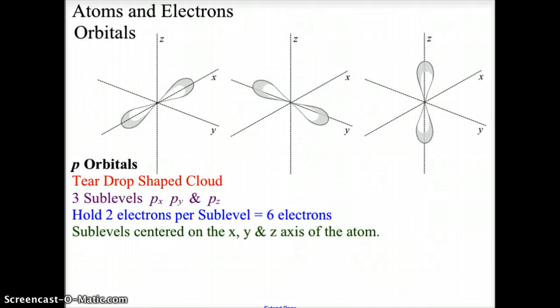As we move up to the P orbitals, we are seeing teardrop-shaped clouds that connect at the origin. There is an X pair, a Y pair, and a Z pair. We have a PX, a PY, and a PZ sublevel. Each sublevel can hold two electrons so the P orbital can hold six electrons. The sublevels are centered about the X, Y, and Z axis of the atom.